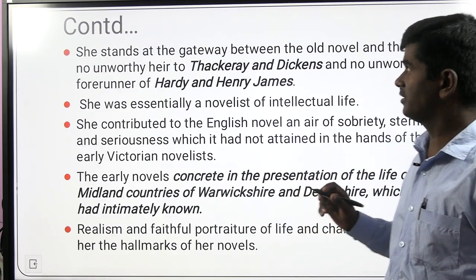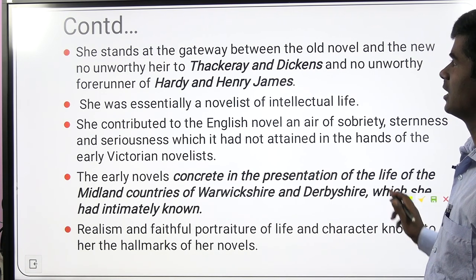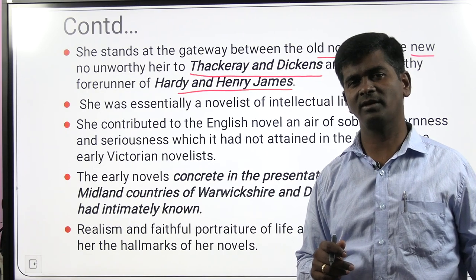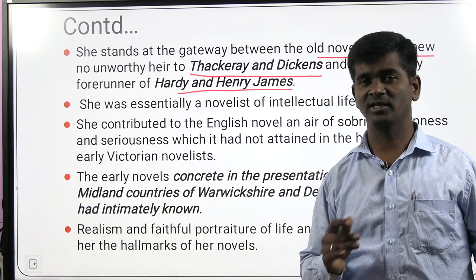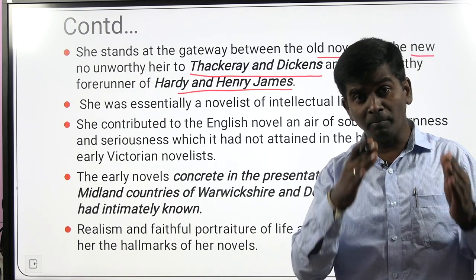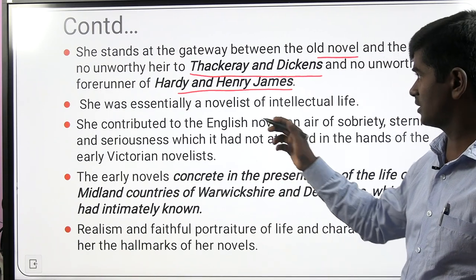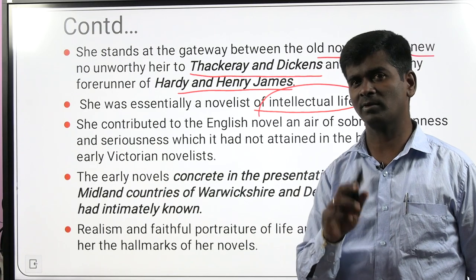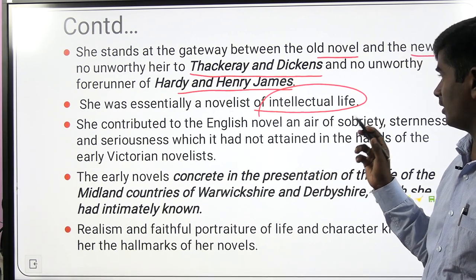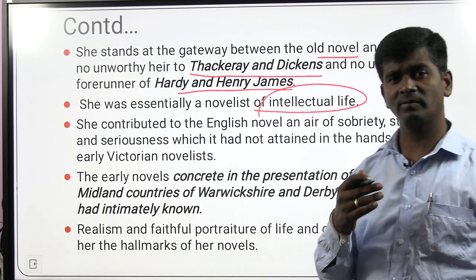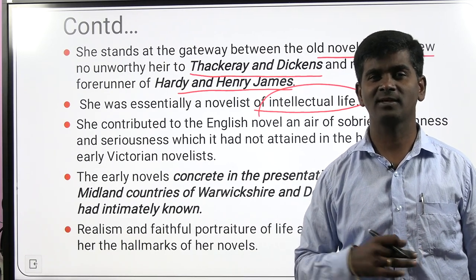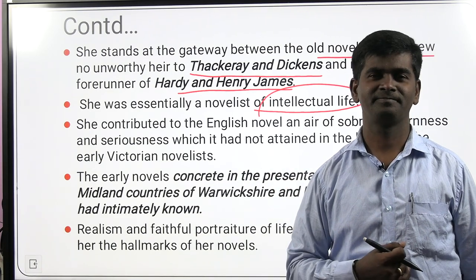George Eliot stands at the gateway between the old novel and the new novel — between Thackeray and Dickens (early Victorian) on one side, and Thomas Hardy and Henry James (late Victorian) on the other. She is a mid-Victorian writer. She was essentially a novelist of intellectual life, going on asking questions of women, men, and society. She contributed to the English novel an air of sobriety, sternness, and seriousness, asking for individuality, freedom, and autonomy away from patriarchal society.